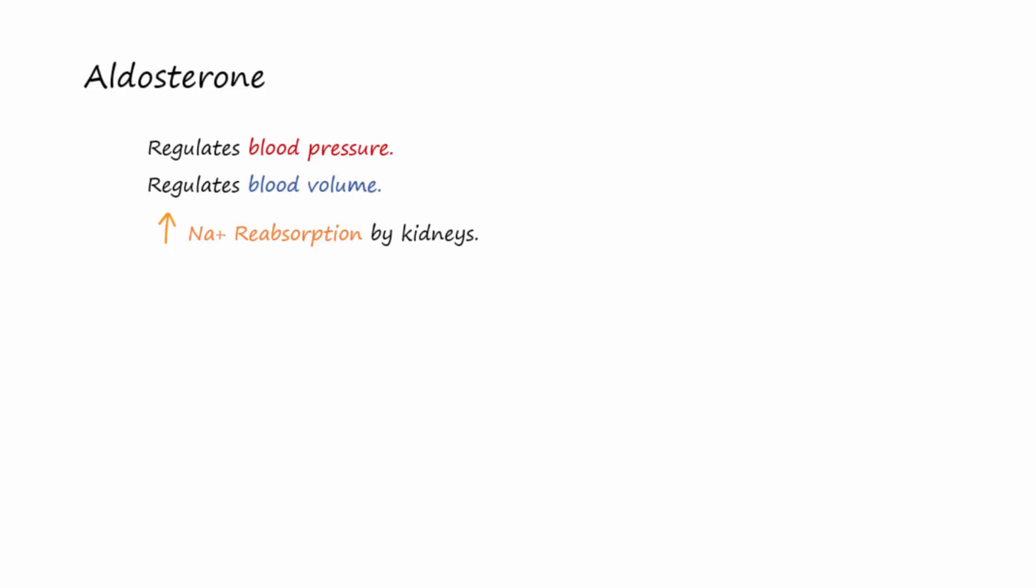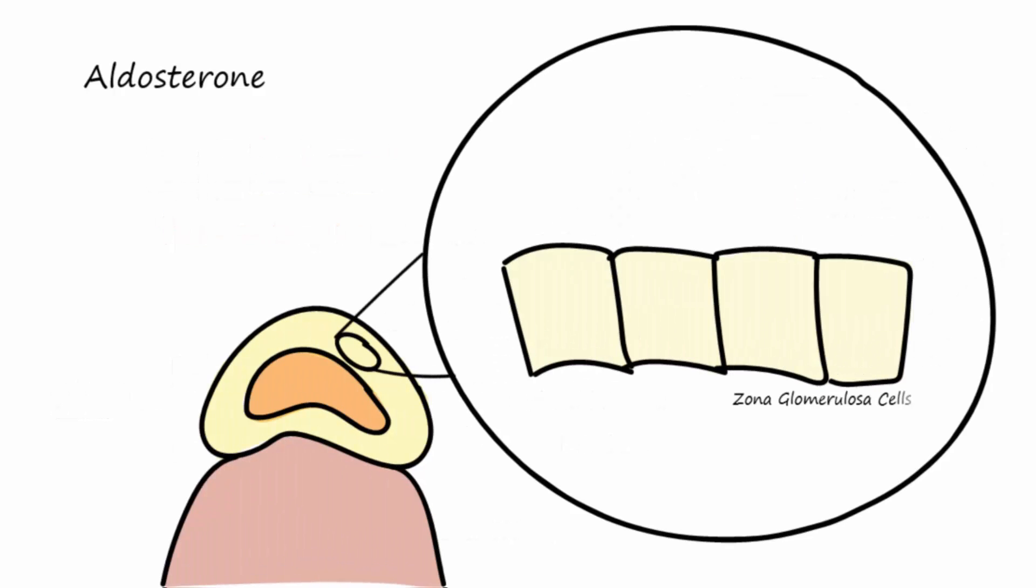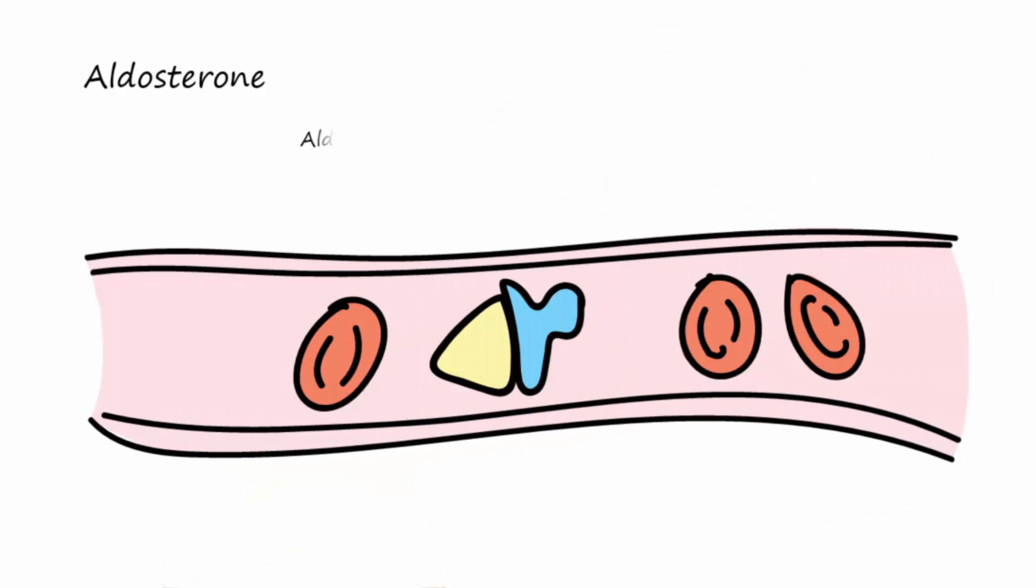It is secreted from the zona glomerulosa of the adrenal cortex. The zona glomerulosa cells use cholesterol to make aldosterone and other mineral corticoids. And since aldosterone is hydrophobic, it needs to be transported in the blood bound to albumin.